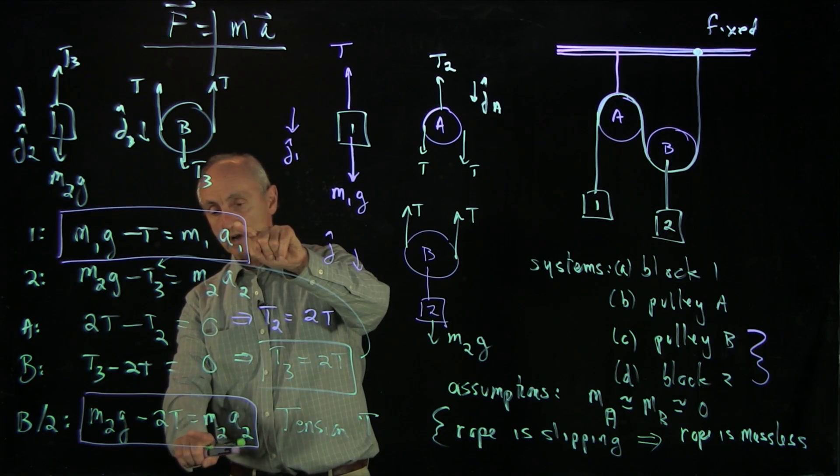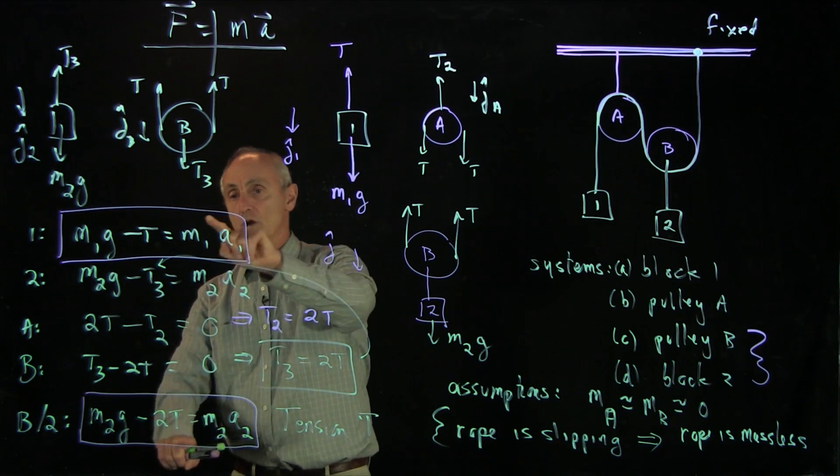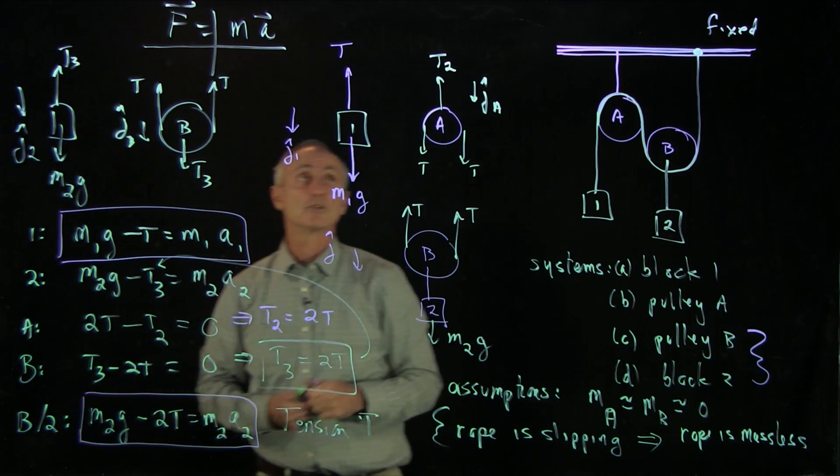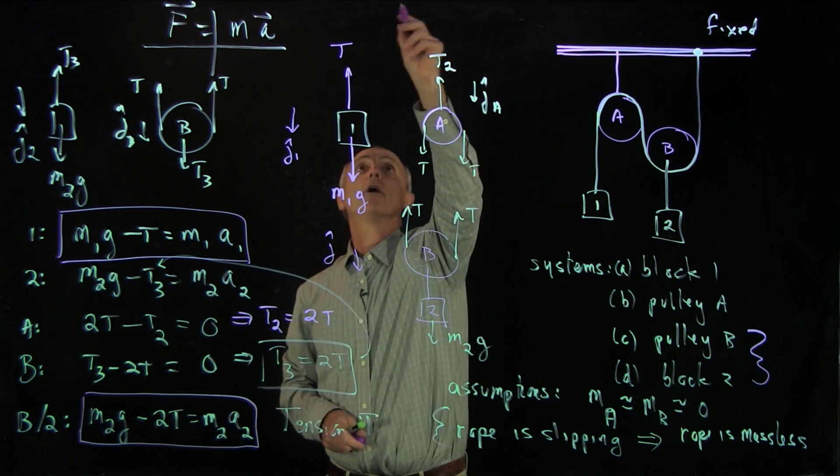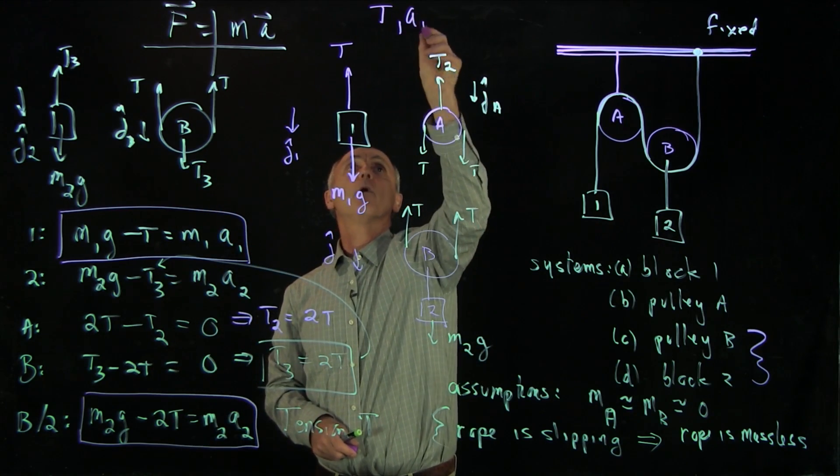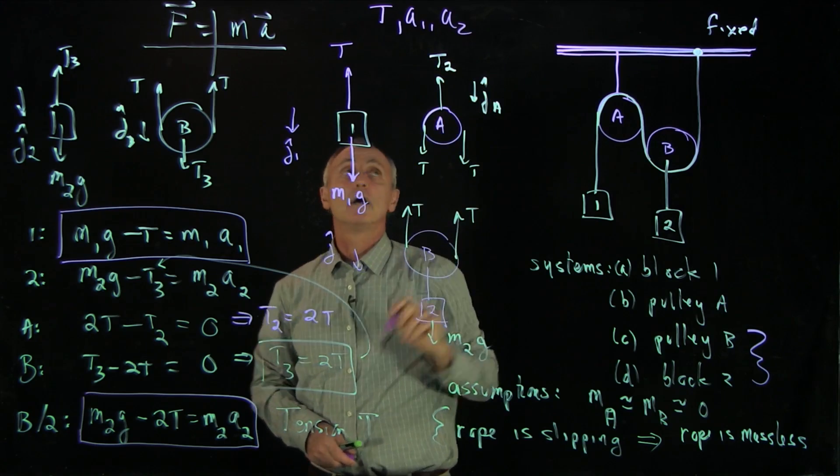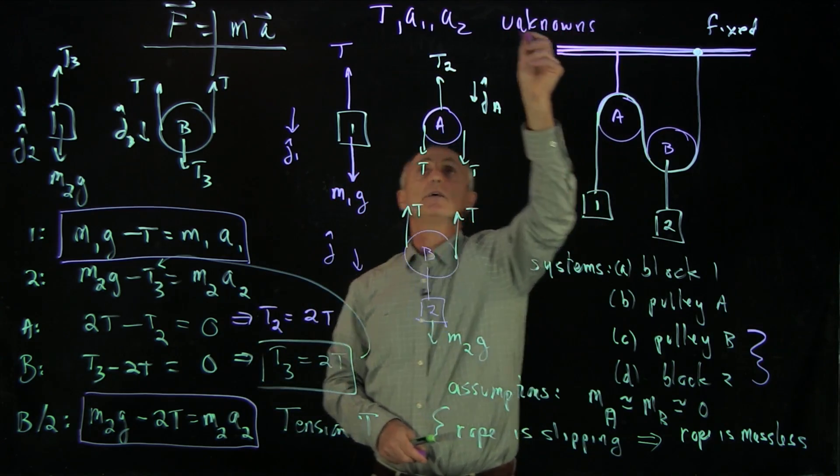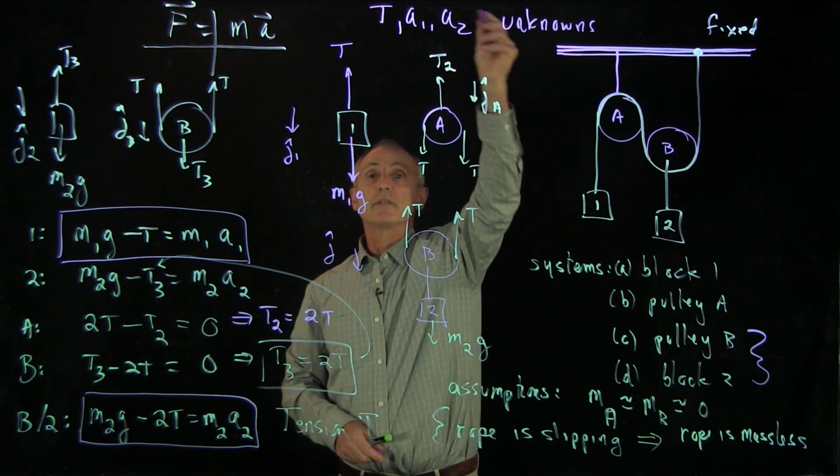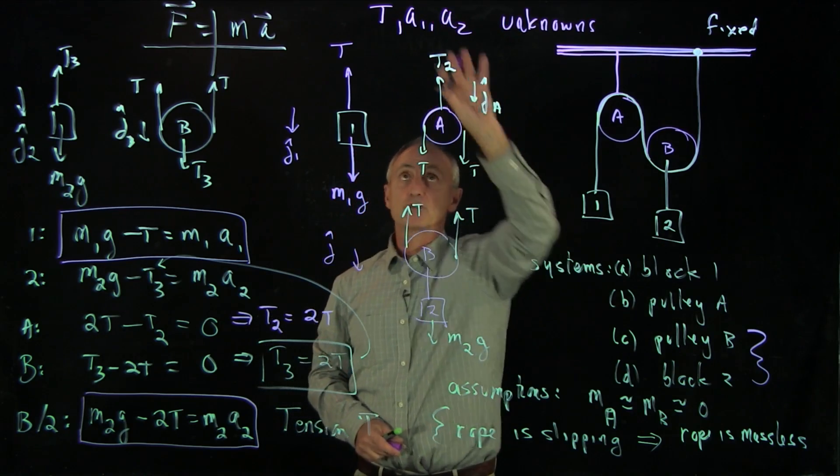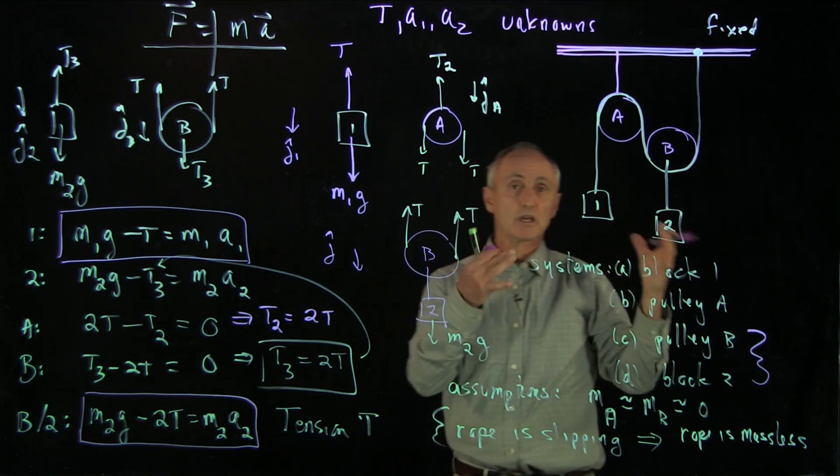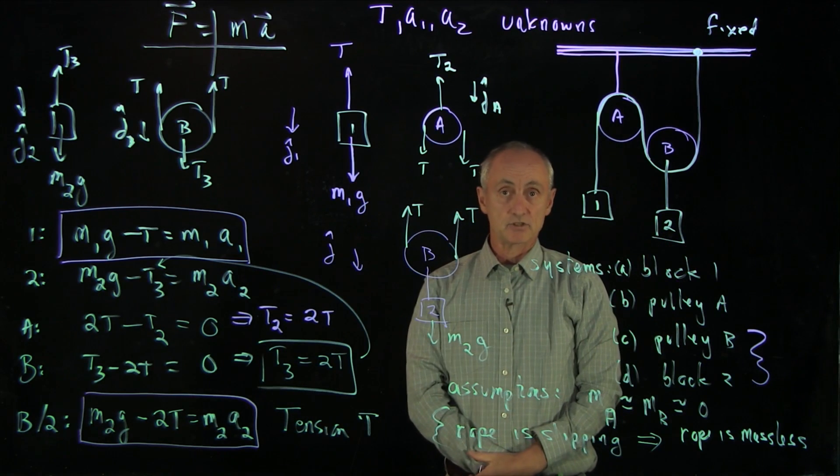Our unknowns are T, a1, and a2. These are our unknowns. And now our next step is to try to figure out what is the missing condition that's relating some of these unknowns. And that will be a constraint condition that we'll analyze next.